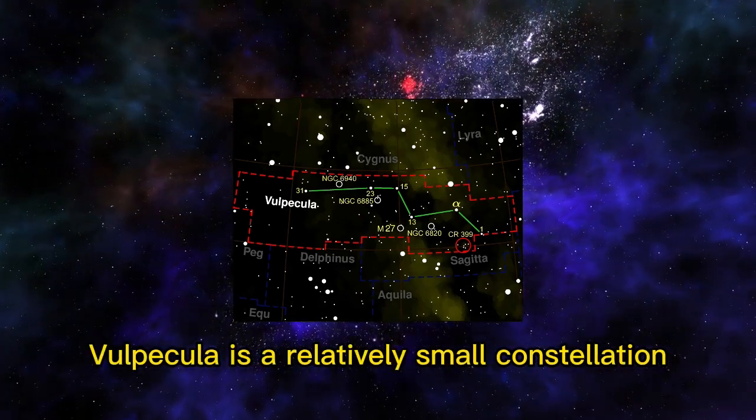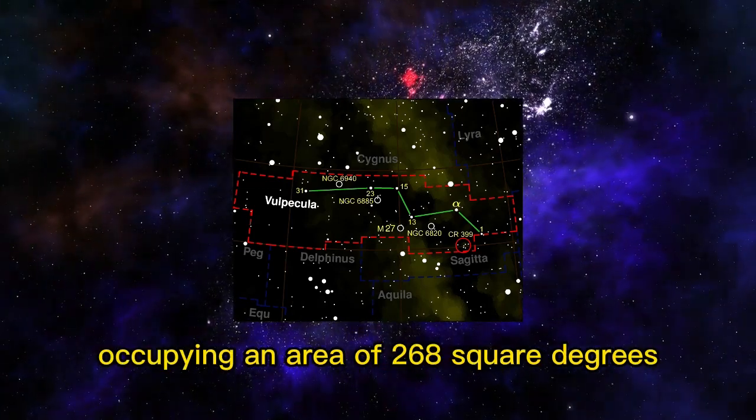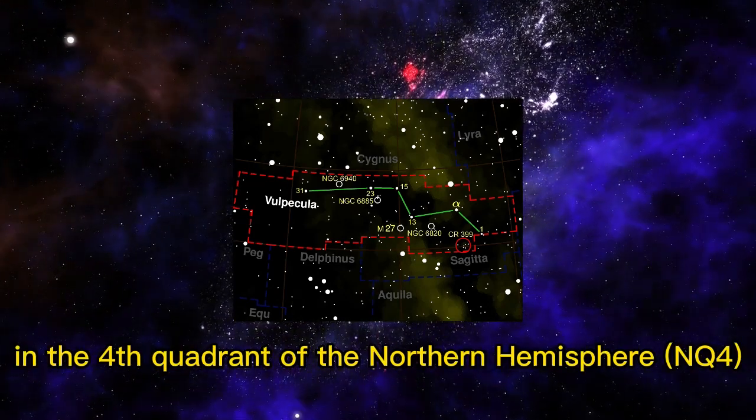Vulpecula is a relatively small constellation, the 55th largest, occupying an area of 268 square degrees in the fourth quadrant of the northern hemisphere, NQ4.